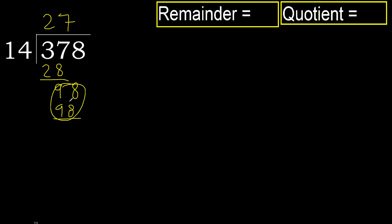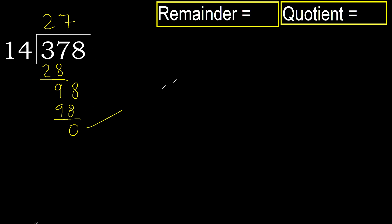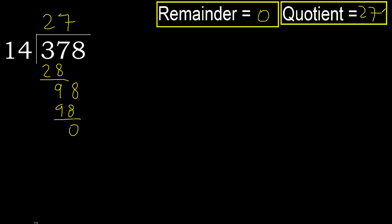Subtract to get 0. There is no next number, therefore we finish. 378 divided by 14 is 27.